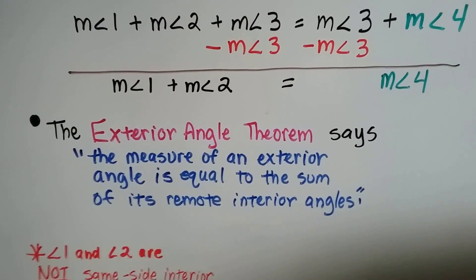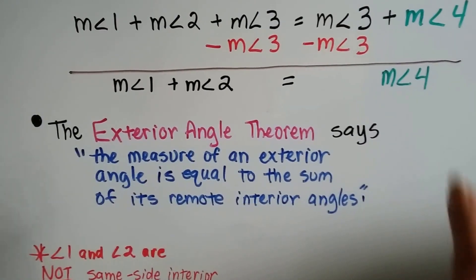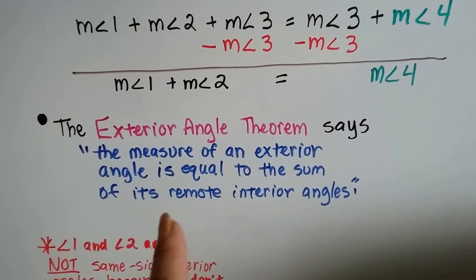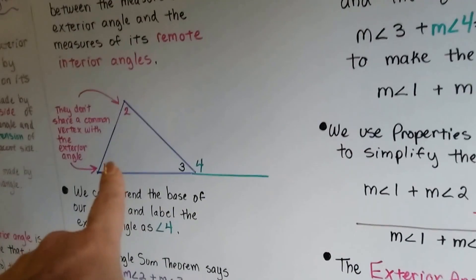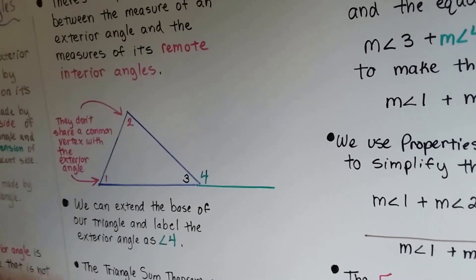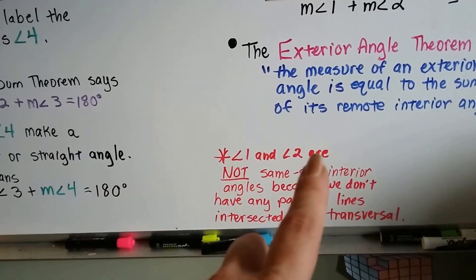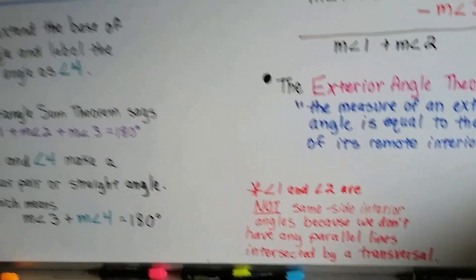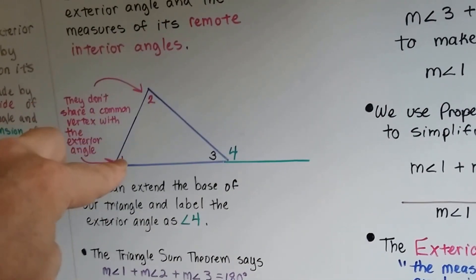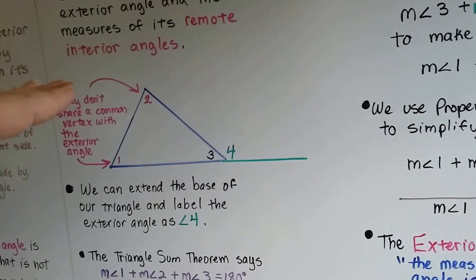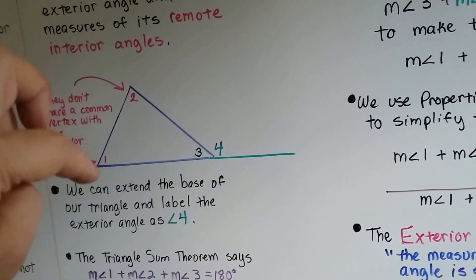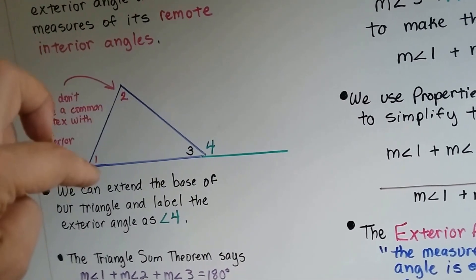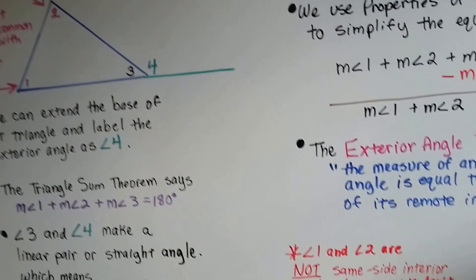The exterior angle theorem says the measure of an exterior angle — measure of angle 4 — is equal to the sum of its remote interior angles, and we know angles one and two were the remote interior angles. So angle four equals these two angles. I also want to point out: angle one and angle two are not same-side interior angles like we talked about in the previous video. We don't have a parallel line here — all we have is a triangle with an extension. So these are not supplementary; they do not equal 180 degrees together. These are just two interior angles of a triangle.